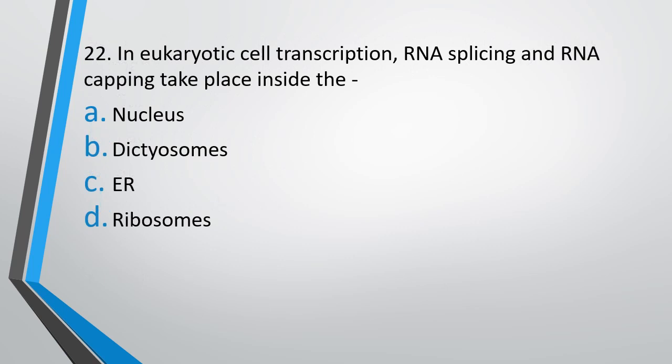Question number 22: In eukaryotic cells, transcription, RNA splicing, and RNA capping take place inside — nucleus, dictyosomes, ER (endoplasmic reticulum), or ribosomes. The correct answer is option A, within the nucleus.